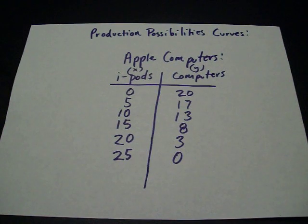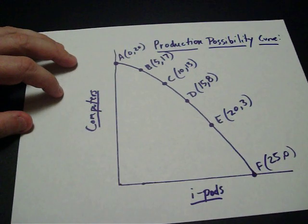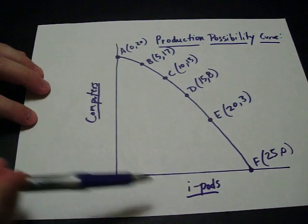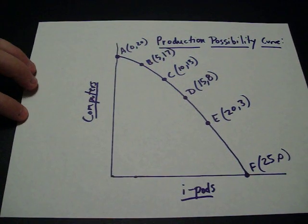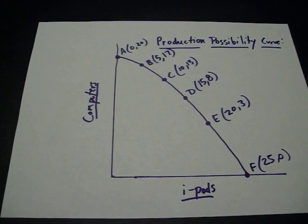If we take these numbers and then plot them on an X and a Y axis, we get something that would look like this. Put iPods on the X axis since that was our X product, computers on the Y axis since that was our Y product. And we get a line that looks like this.